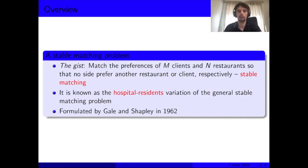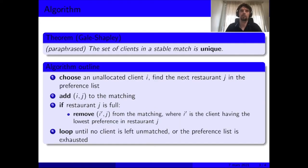This variation is known as the hospital-residents variation of the general stable matching problem, where there are multiple preference lists. All these problems were formulated by Gale and Shapley in 1962. Importantly, we know that in stable matchings, the set of clients is unique.